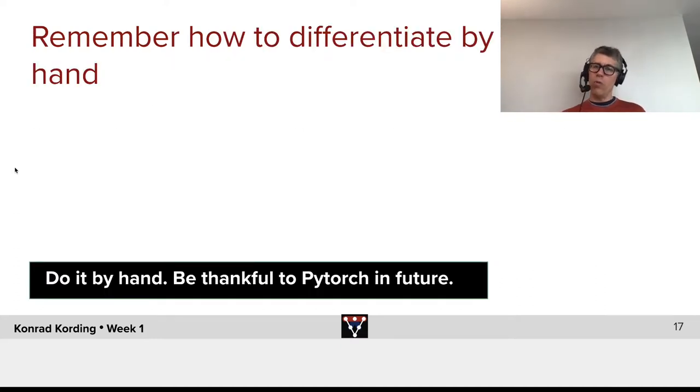And before we allow you to go on and be happy with automatic gradients, automatic differentiation that we get from PyTorch, I want you to remember how difficult it is to differentiate by hand. So, we set up like a simple problem where you can calculate the partial derivative. You'll do this one by hand and check if you agree with PyTorch. And in the future, we will fortunately have PyTorch do that for us.